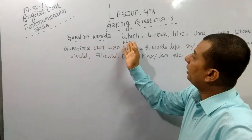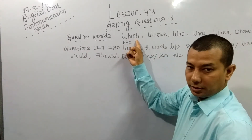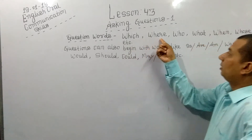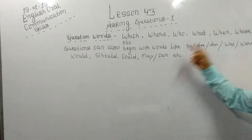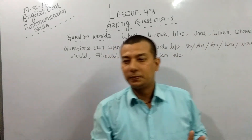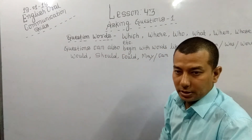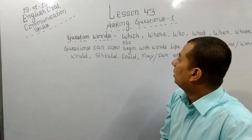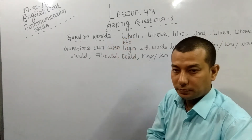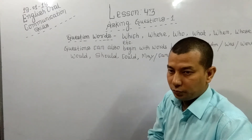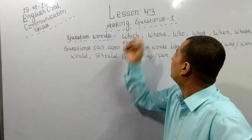Some question words are written here. Can you pronounce these words? Which, Where, Who, What, When, Whose, Why, How, et cetera. Now can we form sentences with the help of these question words? For example: Which subject do you like the most? Where are you going? Who are you? What is the matter? When will you come? Whose book is this? Why are you late? How are you?